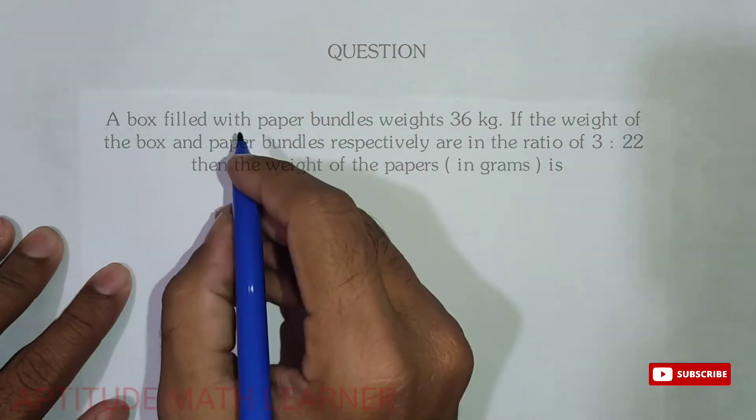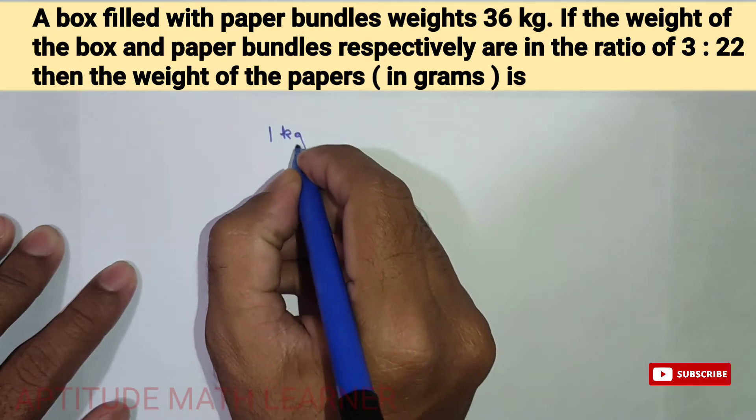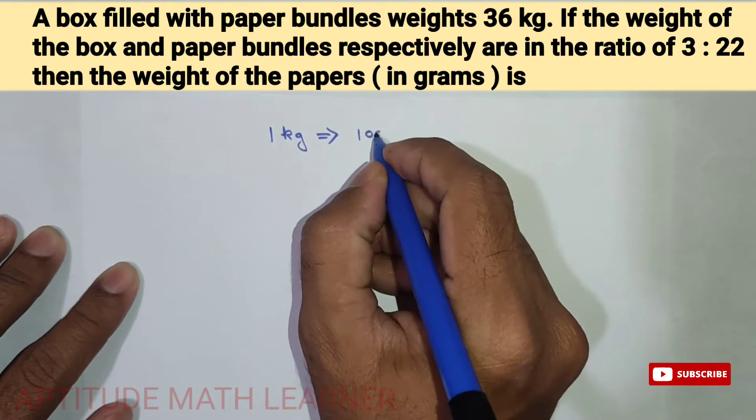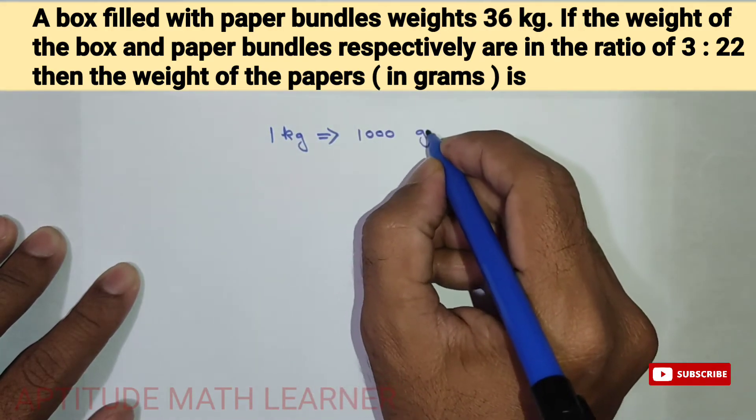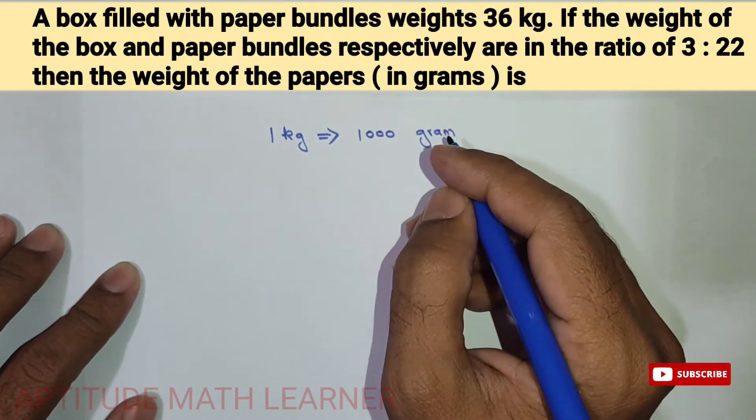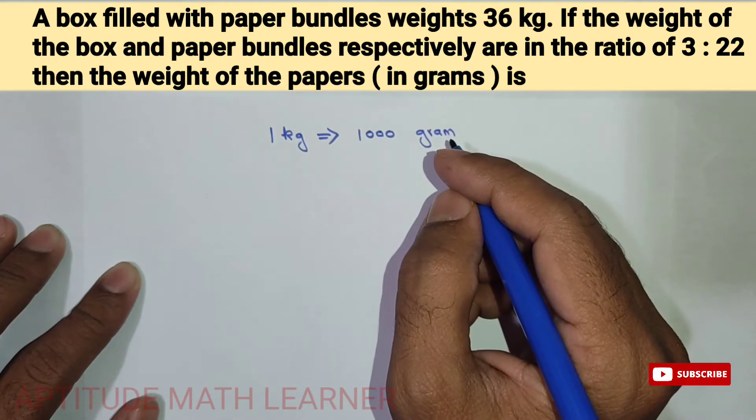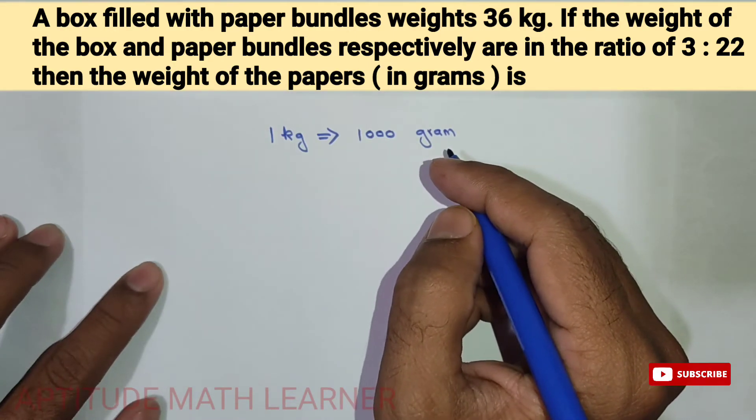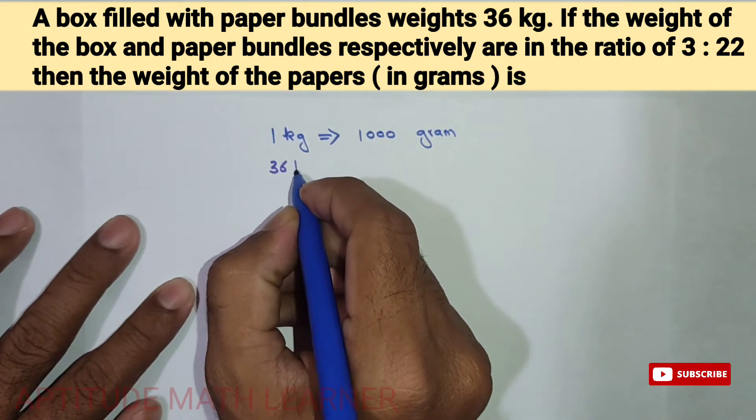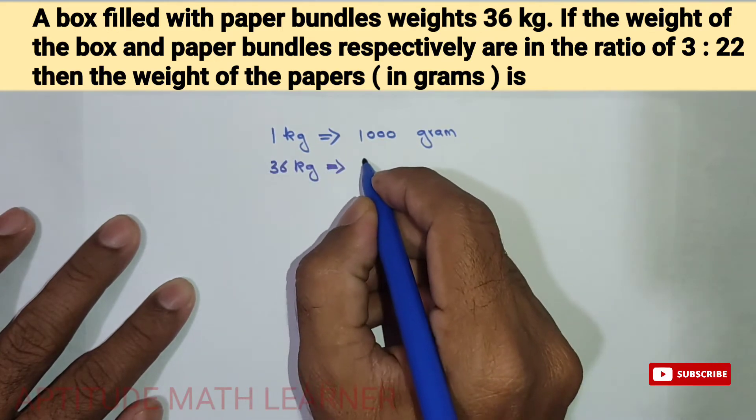If one kilogram, that is equal to 1000 grams. So if you see in the question, a box filled with paper bundles weighs 36 kilograms. So for 36 kilograms, if we convert it into grams, that becomes 36,000. So this is in grams.